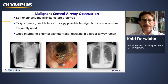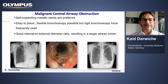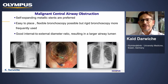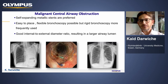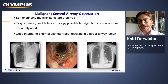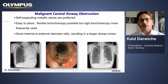In case of malignant central airway stenosis, which is the most frequent indication for airway stenting, self-expanding metallic stents are usually preferred. They are easy to place, have a thinner wall, and therefore a better internal to external diameter ratio, resulting in a larger airway lumen. They are usually placed via rigid bronchoscopy, although they can be placed using flexible bronchoscopy.